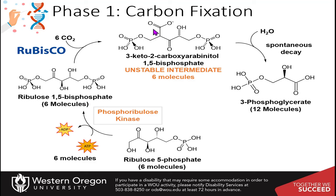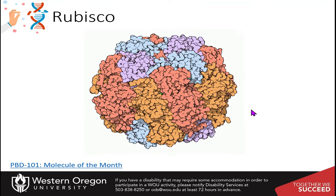You'll get incorporation of six carbon dioxides into six molecules of ribulose 1,5-bisphosphate. These all then break in half and make 12 molecules of the 3-phosphoglycerate. So to make one molecule of glucose, you need to have 12 of these present. Let's talk a little bit about the Rubisco enzyme.